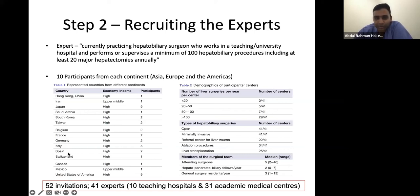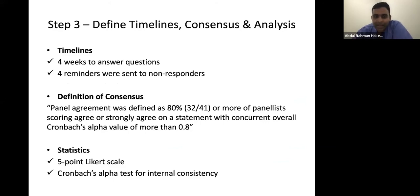In total, they sent 52 invitations; 11 did not respond, and they included 41 experts from various centers across the world. Once you identify the experts, you send the questions — you frame them, check them within your facilitator panel, and then send them to the experts. The experts look through the questions and try to identify what they agree and disagree on. You give them specific timelines to answer and send reminders. Importantly, you need to define what will count as consensus — for example, if there are 41 experts, you might require at least 80% agreement on a question for it to be considered validated.